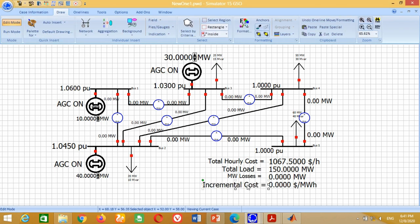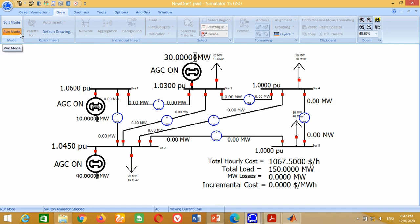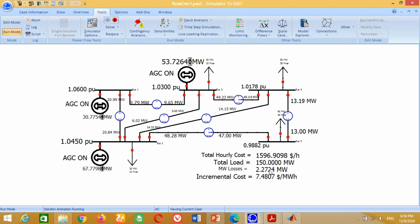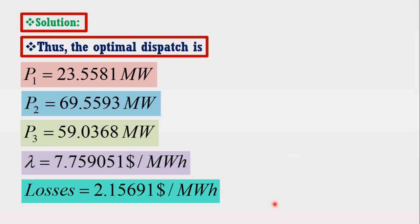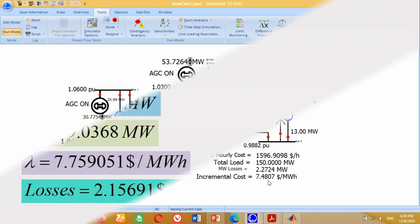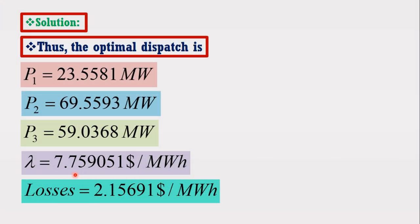At this stage our model is complete. Now you can run the simulation. Click on Run Mode, go to Tools and click the Play button. You can see it has successfully performed the economic load dispatch. Now compare the losses measured by the software with the losses obtained in the example. The losses obtained by the software are quite high. However, comparing the incremental cost, despite the higher losses, the incremental cost measured by the software is still quite low compared to the cost obtained in the example.